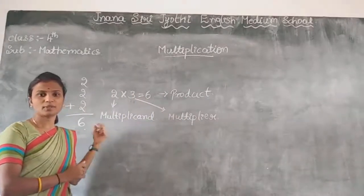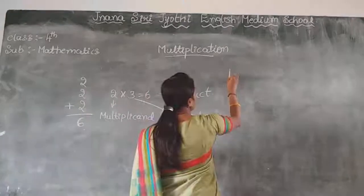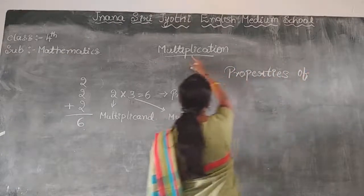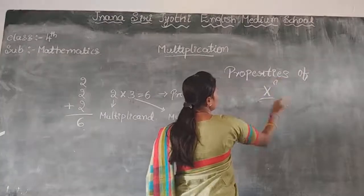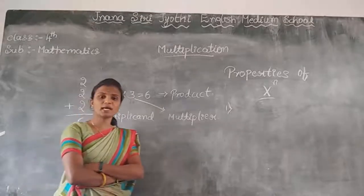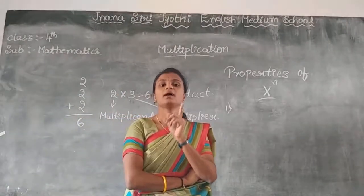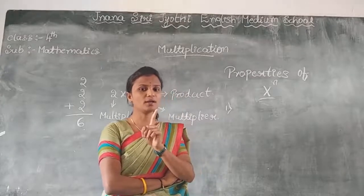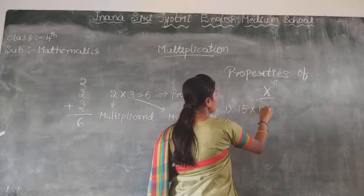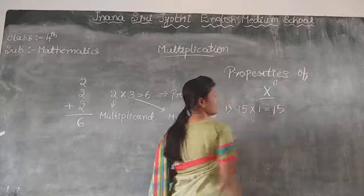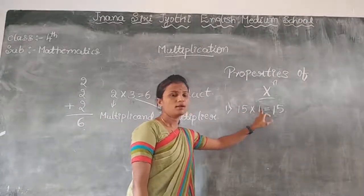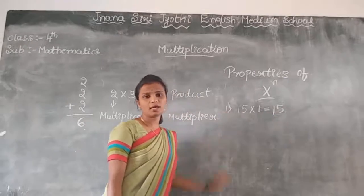Now you got the concept. Next, we shall move on to the properties of Multiplication. The first property is: if any number is multiplied by 1, then the product is the number itself. For example, 50 into 1 gives the product as 50. The number itself remains the same.